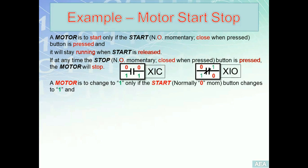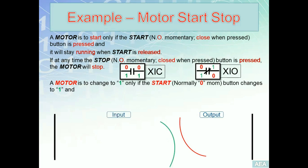As we discussed in earlier tutorials, each rung in a ladder diagram consists of two main sections: an output section and an input section. We always start from the output section. Per this requirement, the output involved is the motor, so we insert the correct instruction — the OTE — referring to the motor. We're not done yet; we need to add the input section to fulfill this requirement completely.